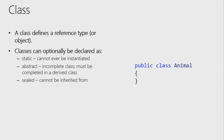A sealed class cannot be extended or inherited from. You're declaring that you have absolutely nailed the specification of that object and nobody else will be able to extend it further. Extension methods are an exception — they don't break encapsulation and don't make internal data available; they just add to the functionality.